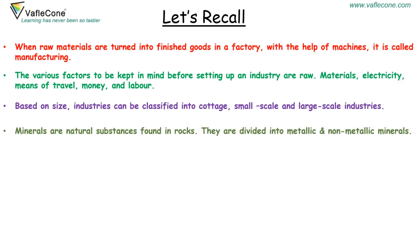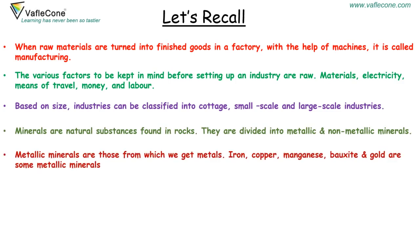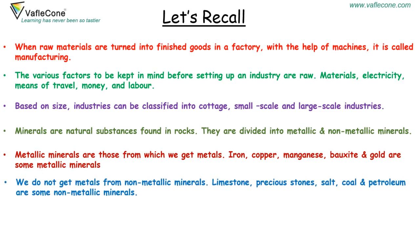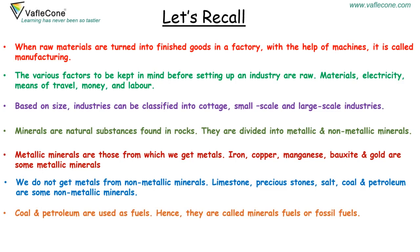Minerals are natural substances found in rocks. They are divided into metallic and non-metallic minerals. Metallic minerals are those from which we get metals — iron, copper, manganese, bauxite and gold. We do not get metals from non-metallic minerals; limestone, precious stones, salt, coal and petroleum are some examples. Coal and petroleum are used as fuels, hence they are called mineral fuels or fossil fuels. Jharkhand, Odisha and Chhattisgarh are rich in minerals.